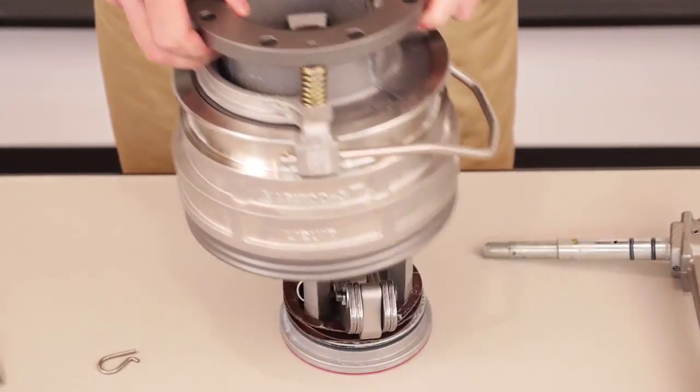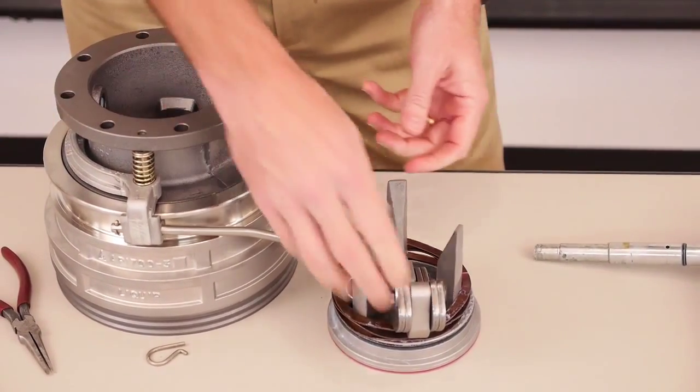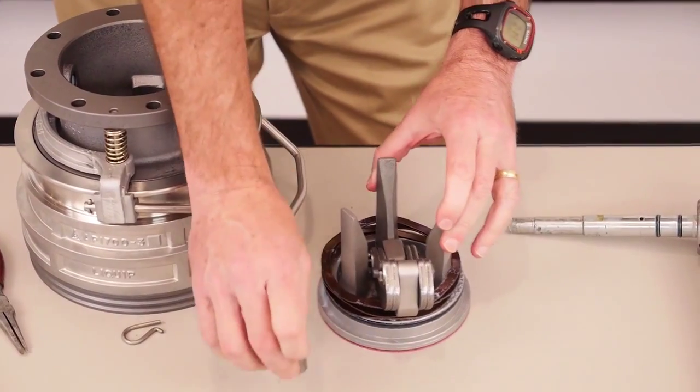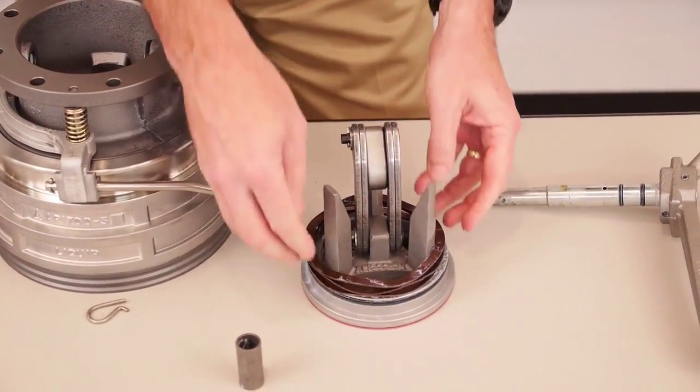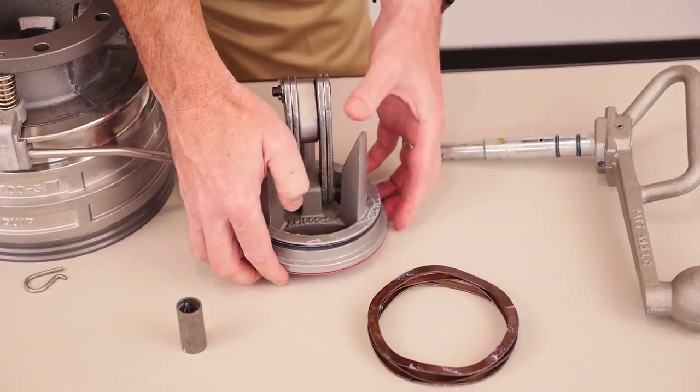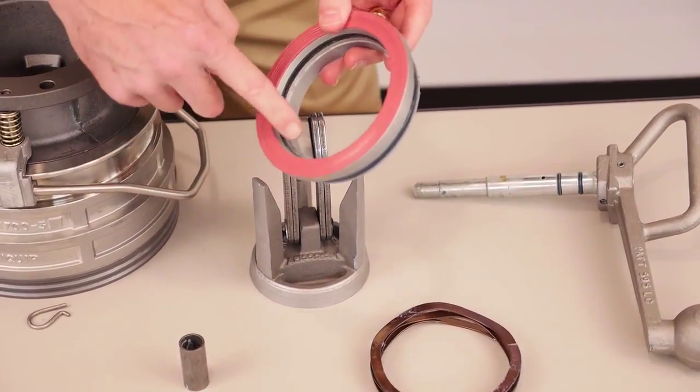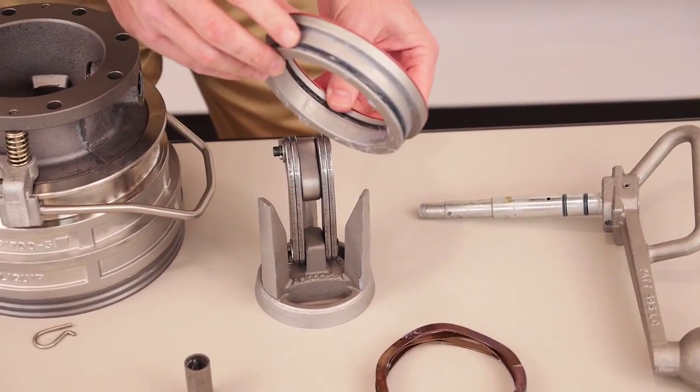And with that removed, we then have access to all the internal seals that need to be replaced. So we have our tube spacer, our poppet, our wave spring, our poppet adapter ring that has your inner O-ring, your outer O-ring.